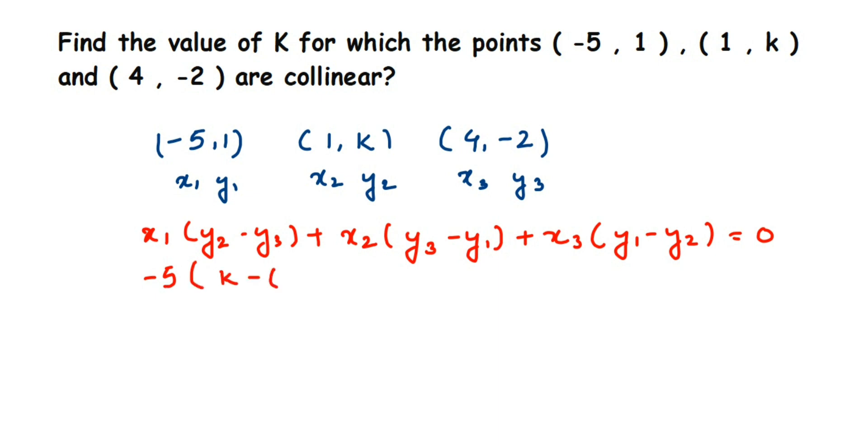Now I am going to substitute the values. x1 is -5, y2 is k, y3 is -2. x2 is 1, y3 is -2, y1 is 1. x3 is 4, y1 is 1, y2 is k. This equals 0.